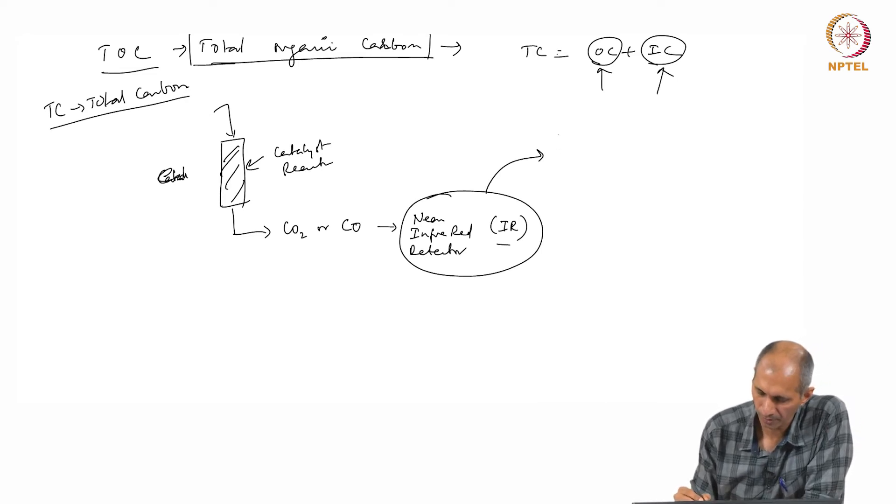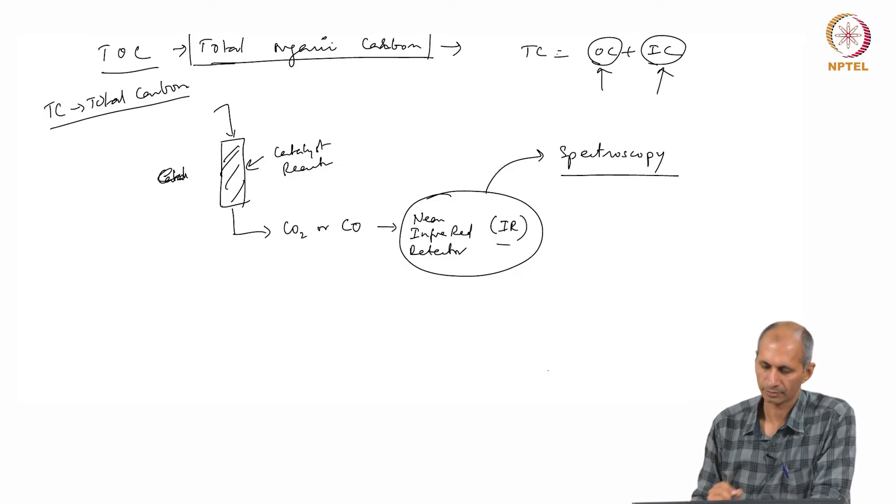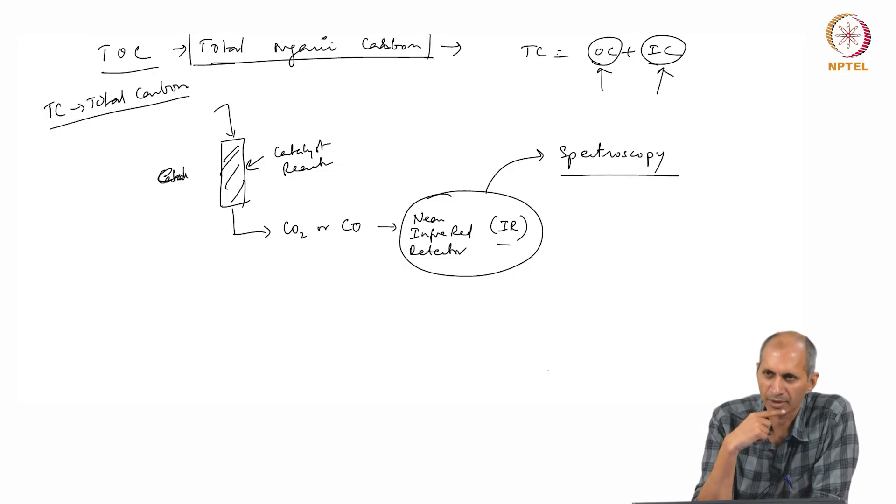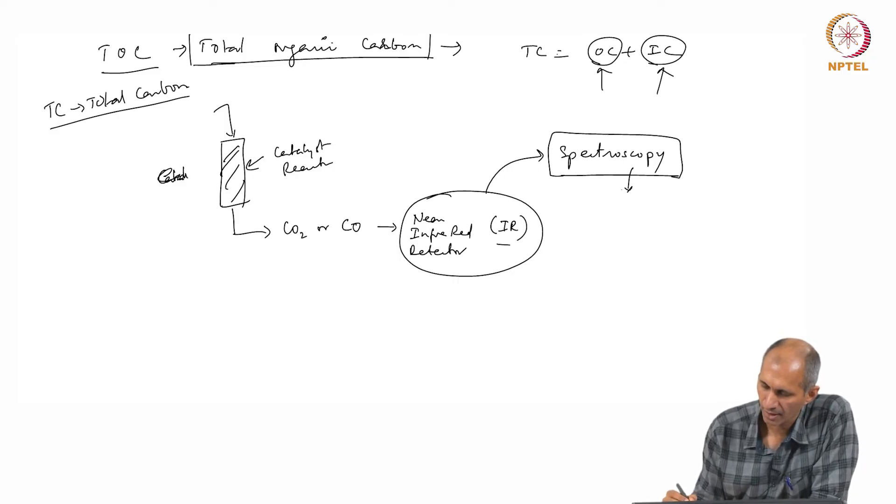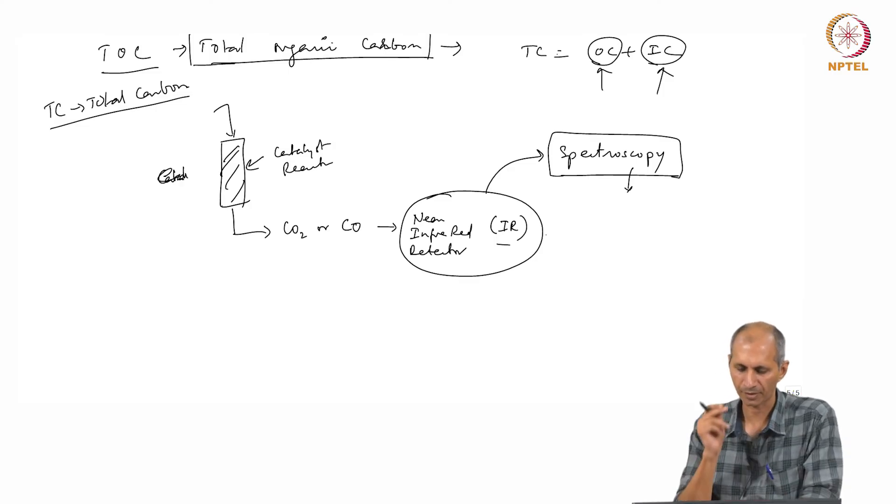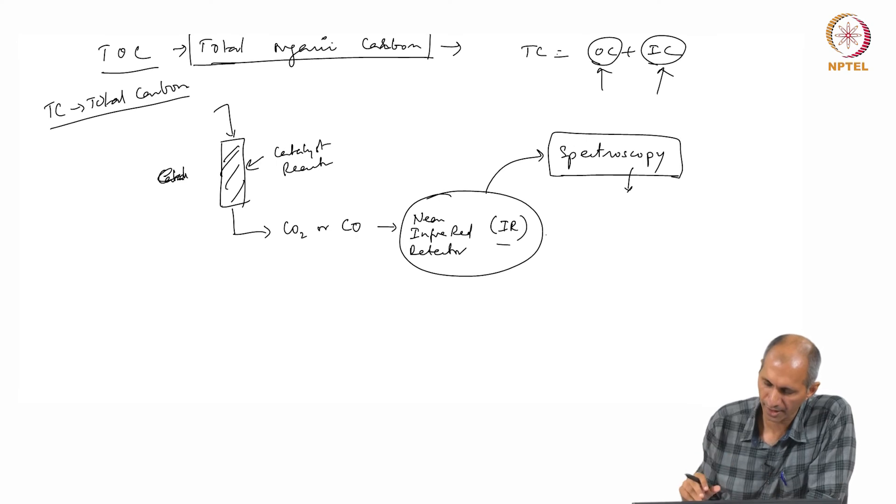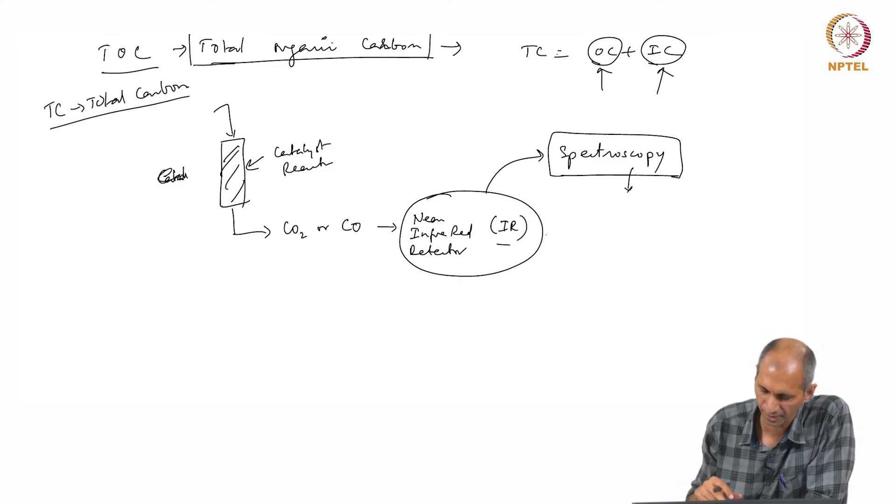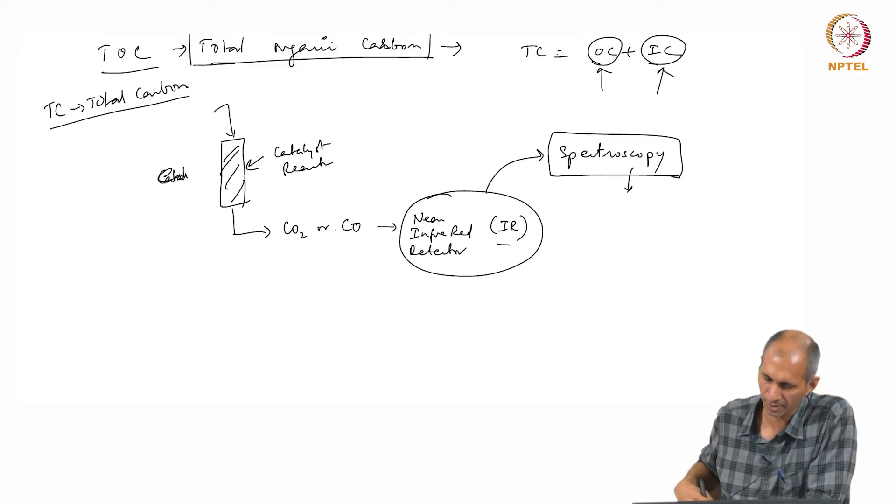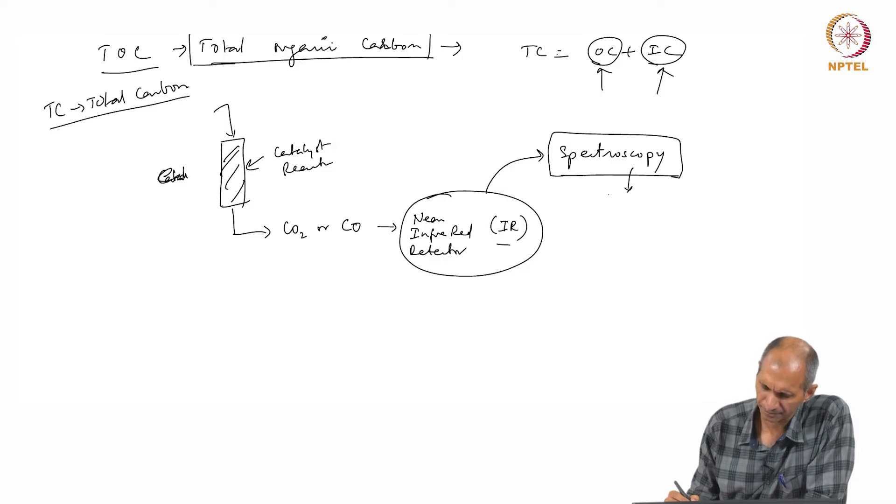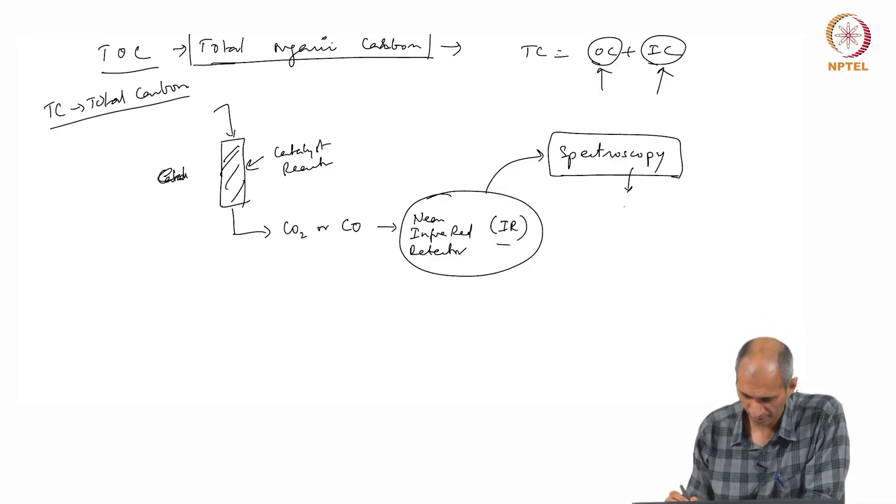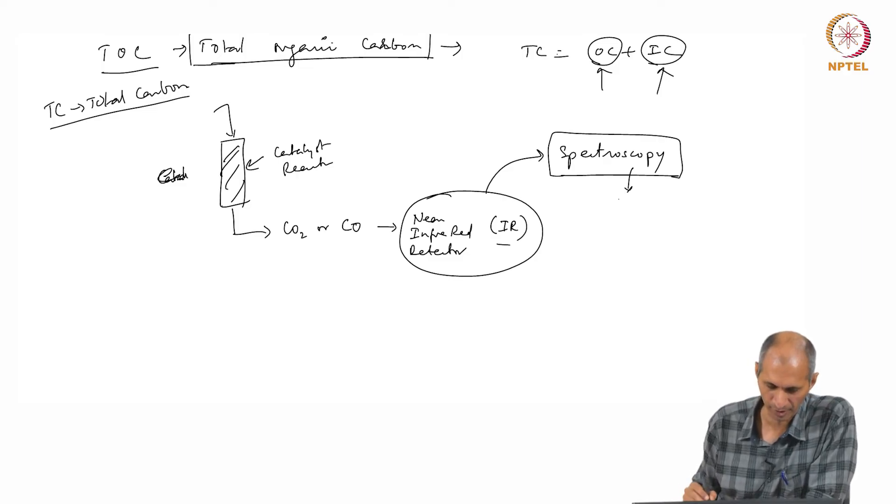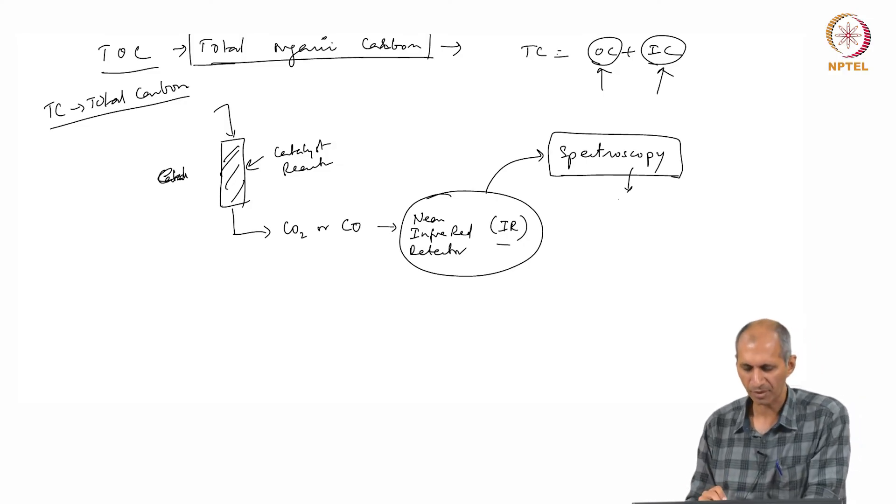This part I will explain a little bit later in the next section. This is what we call spectroscopy. There are different kinds of spectroscopies—atomic spectroscopy, molecular spectroscopy. We are using something where the material that is there interacts with radiation, in this case infrared. It interacts with infrared and gives some signal, and that signal is inferred in terms of CO2 or CO.